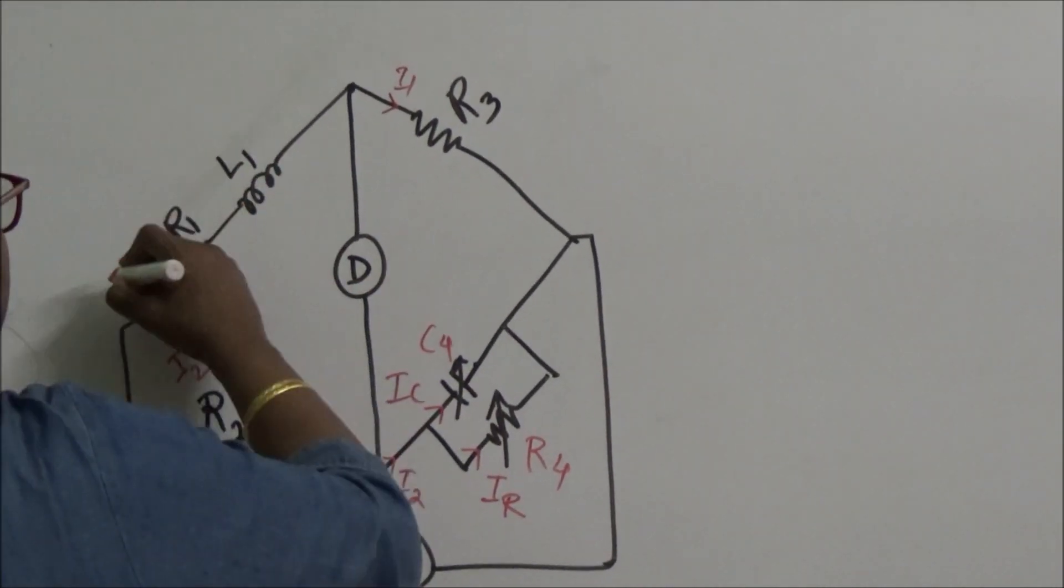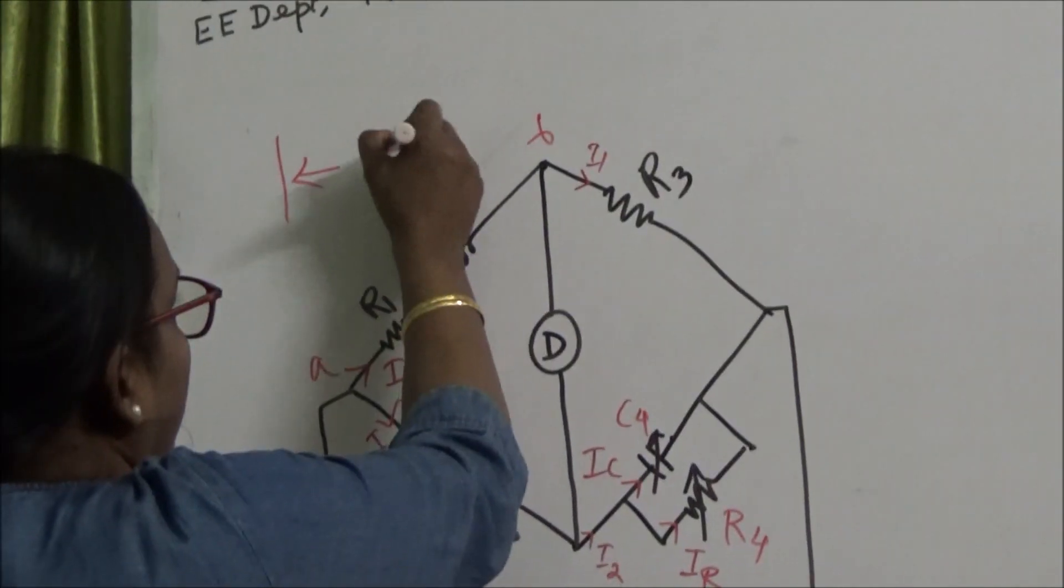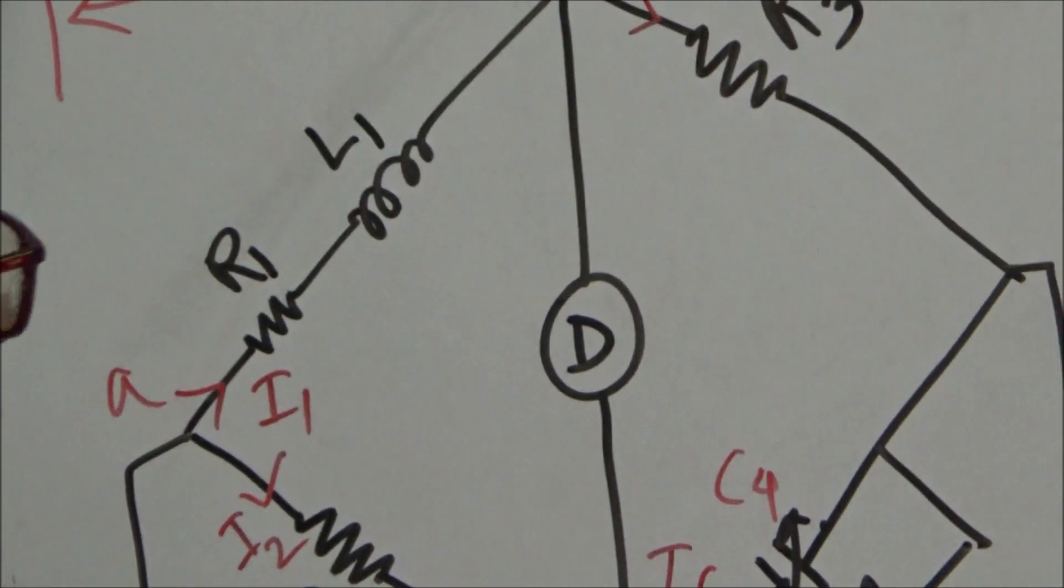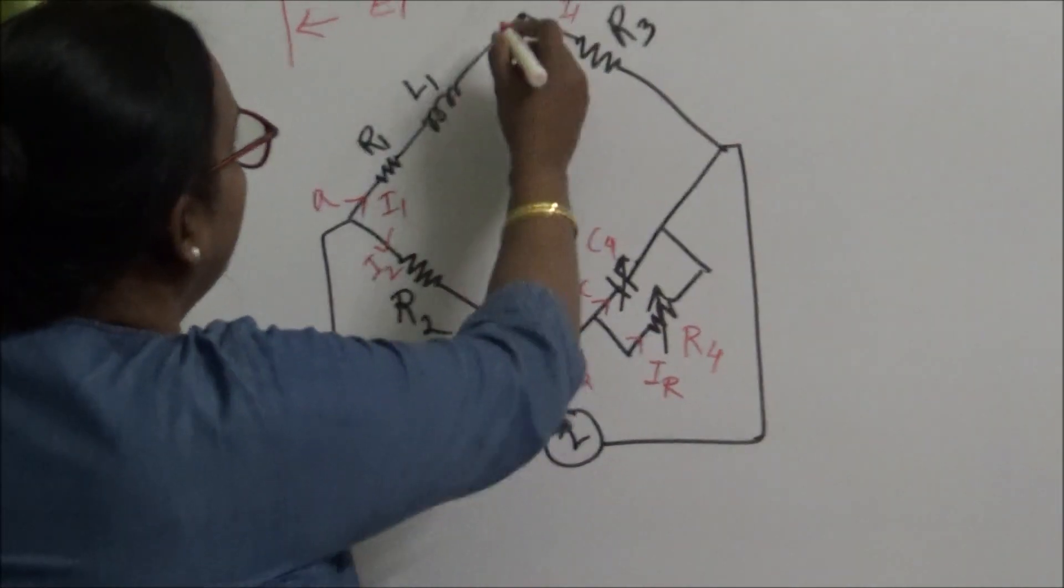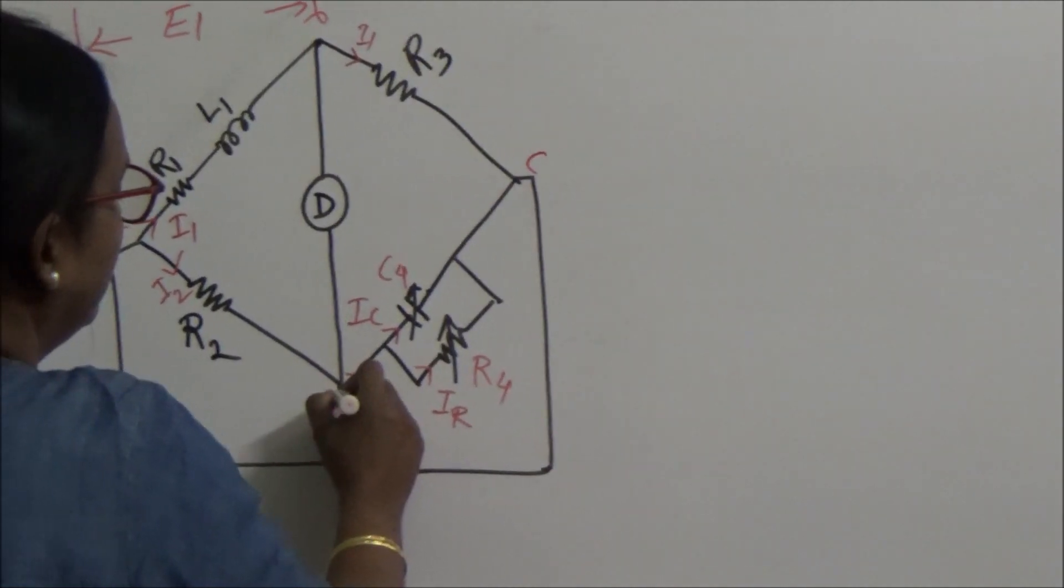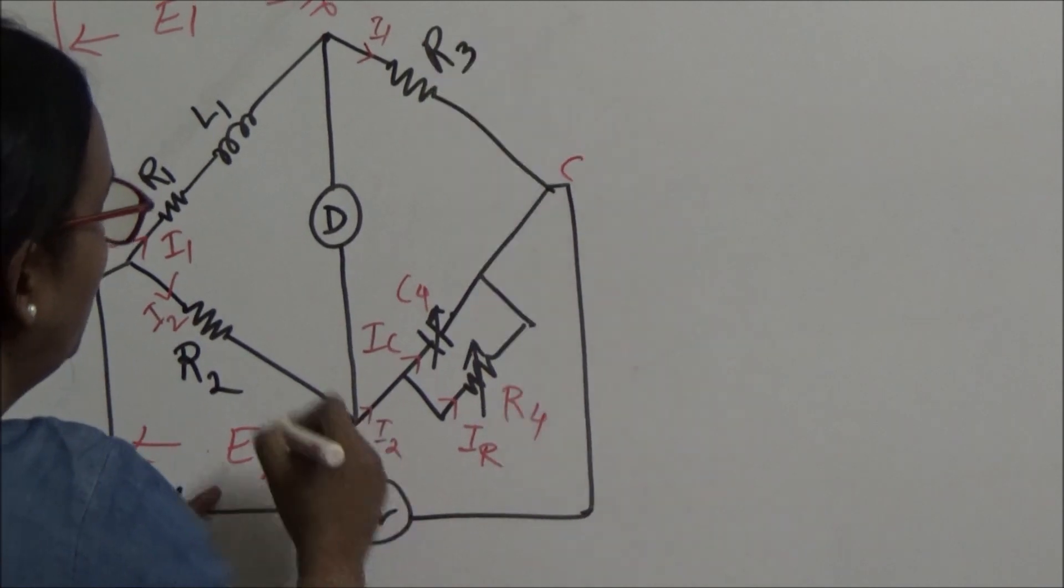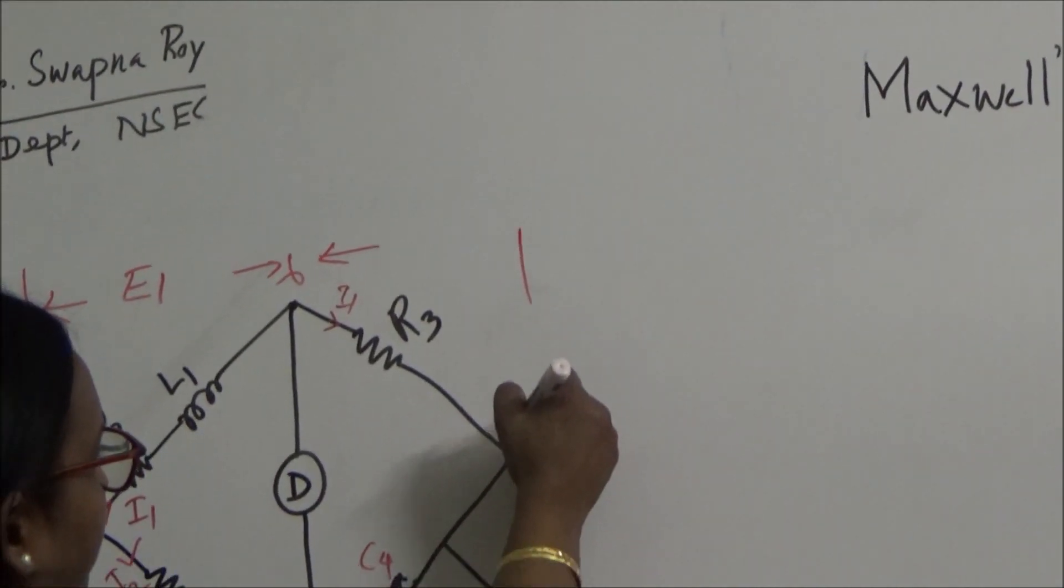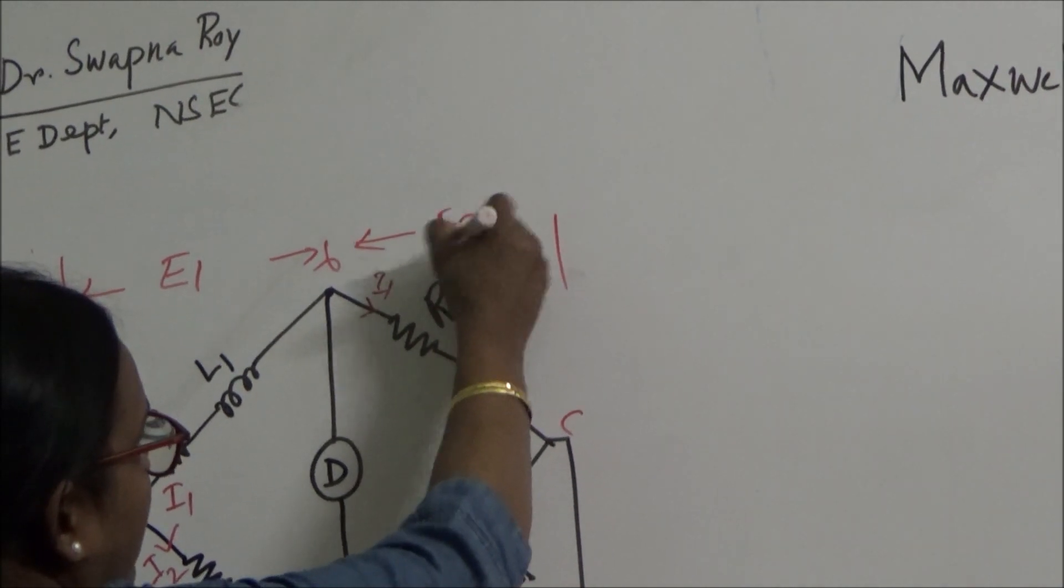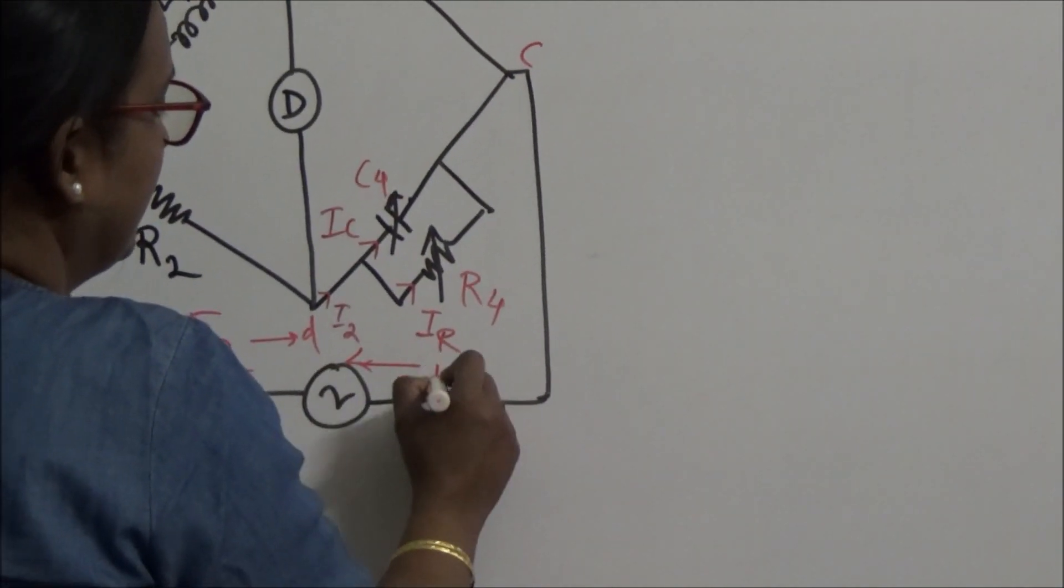The potential between point A and B is E1. Between A and D this is E2. The potential between B and C is E3. And this one is E4.